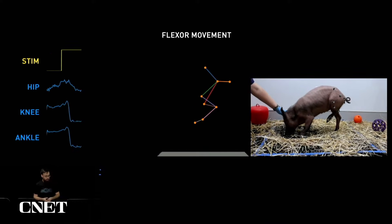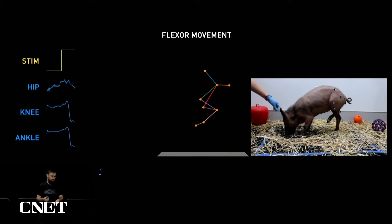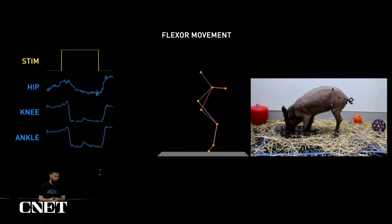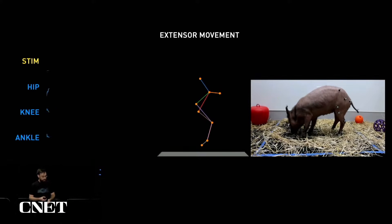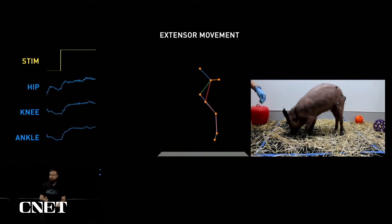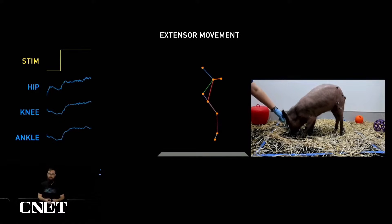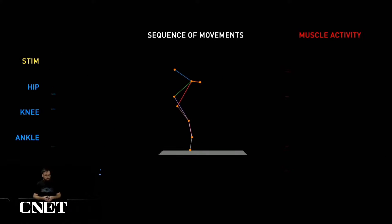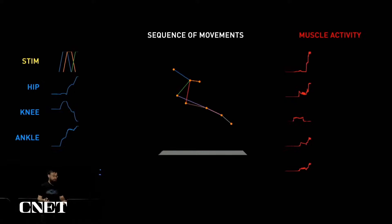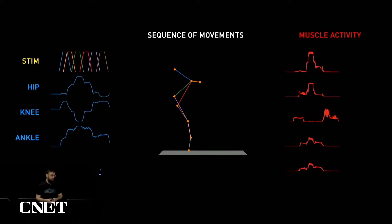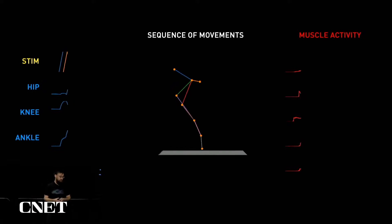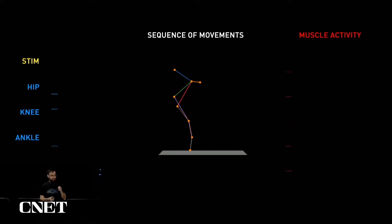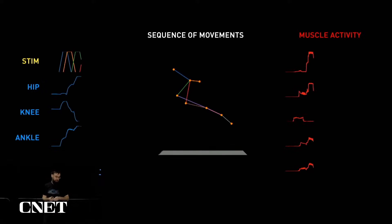Here's one electrode on one thread that when we stimulate causes a flexion movement of the leg. On the left you can see the movement of the joints, and also the time series of the stimulation pattern in yellow — the leg is moving up. Here's another electrode which when we stimulate causes an extensor movement. We can stimulate on a great variety of threads and produce different movements and actually sequence them spatiotemporally to provide patterns. You can see the movements of the joints, and on the right we're zooming in on muscle activity that gives us an idea of the strength, power, and specificity of those movements.